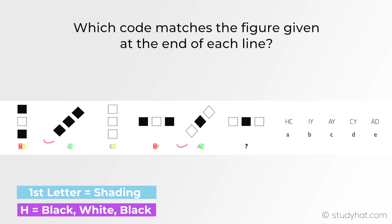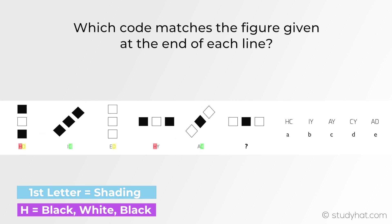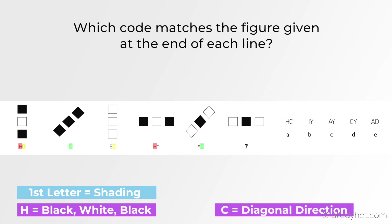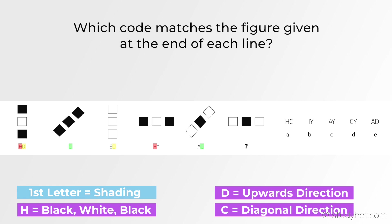Looking at C, which is repeated, what these two figures have in common isn't shading since that is all to do with the first letter. What these have in common is the direction, so we can note that C stands for a diagonal direction. Our last repeated letter was D — these two shapes are both facing upwards, therefore that is the code for D, and it also means we've found the feature of the second letter, which is direction.